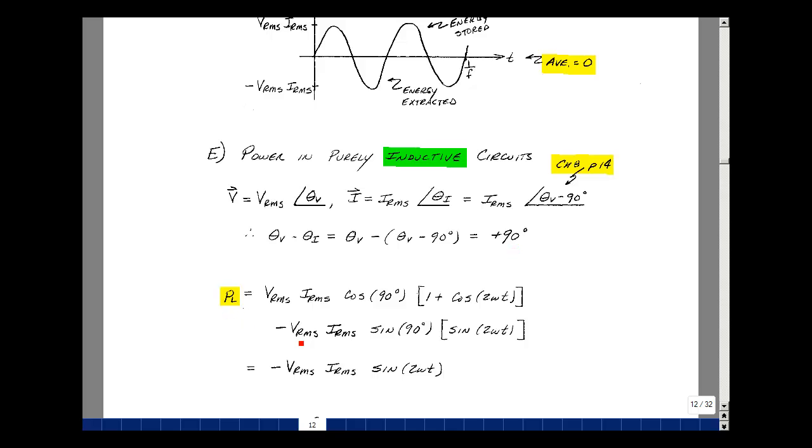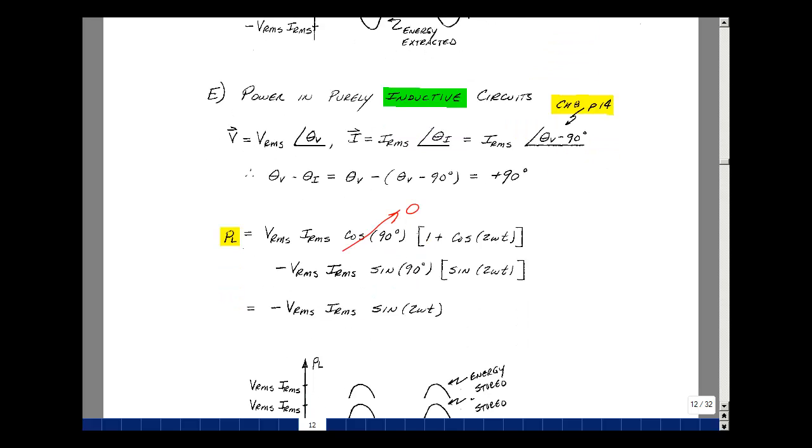So going back to our power absorbed in general, now we have the cosine of 90 and the sine of 90. Cosine of 90 is equal to zero, so this term drops out. And the sine of 90 is just equal to one. We've got V_RMS times I_RMS, then times the sine of 2ωt.